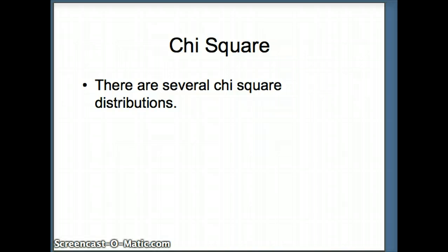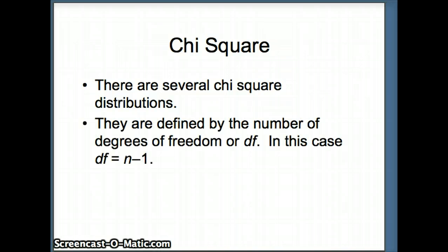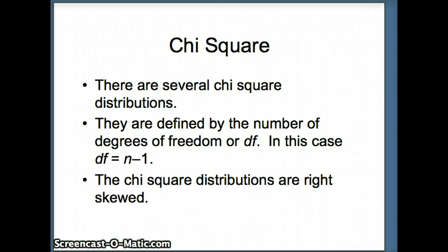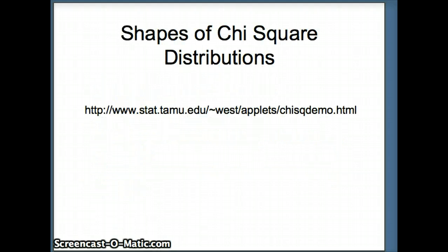There are several chi-square distributions, and they are defined by their degrees of freedom. The degrees of freedom for the chi-square in this case is n minus 1, which is exactly the same as it was for the t-interval. But the chi-square distributions are different in that they are not symmetric — they are right skewed. We can see some of those distributions by looking at the following applet, as we range from 1 to 2 to 3 to 4 to 100 degrees of freedom.